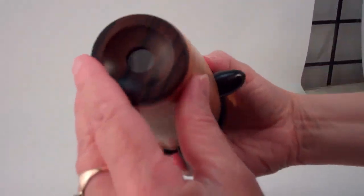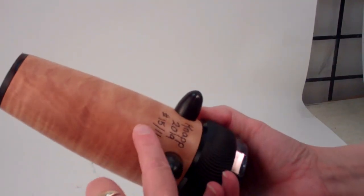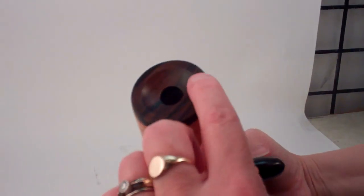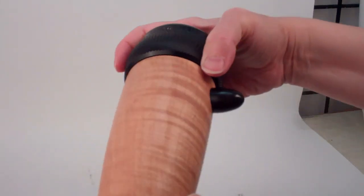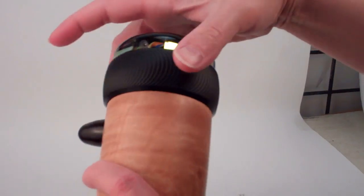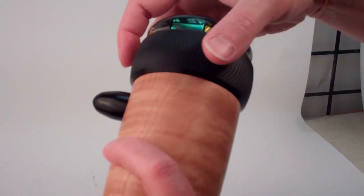The exterior of the kaleidoscope features a barrel of western figured maple, dark wood at the eyepiece, and then the black is all hand turned on the lathe.